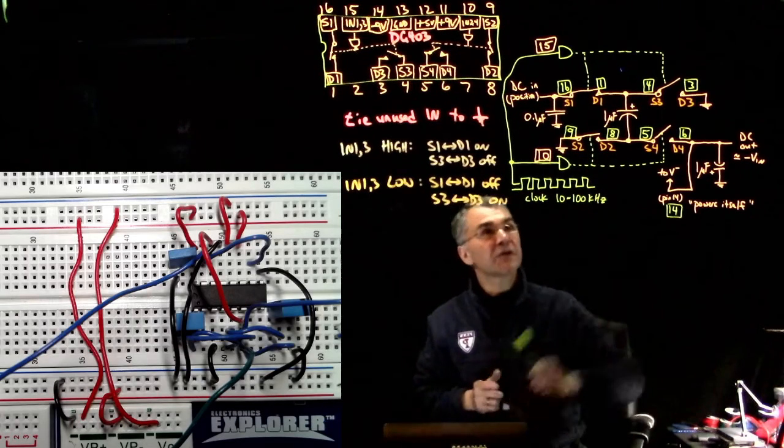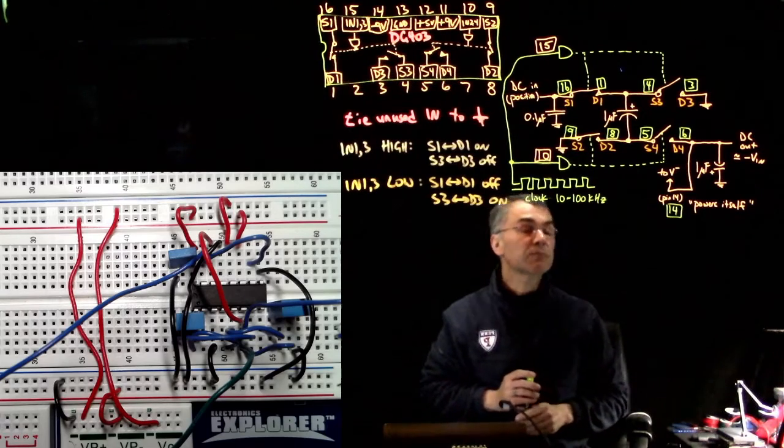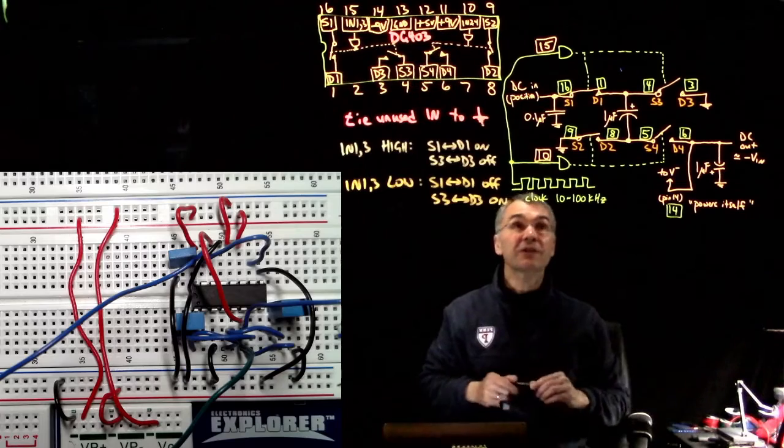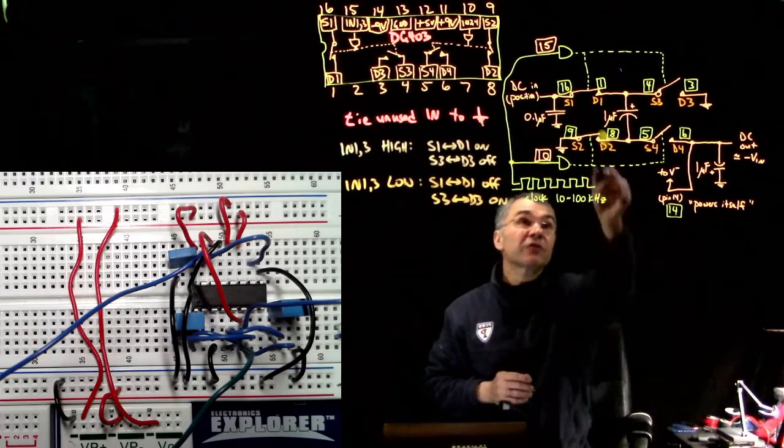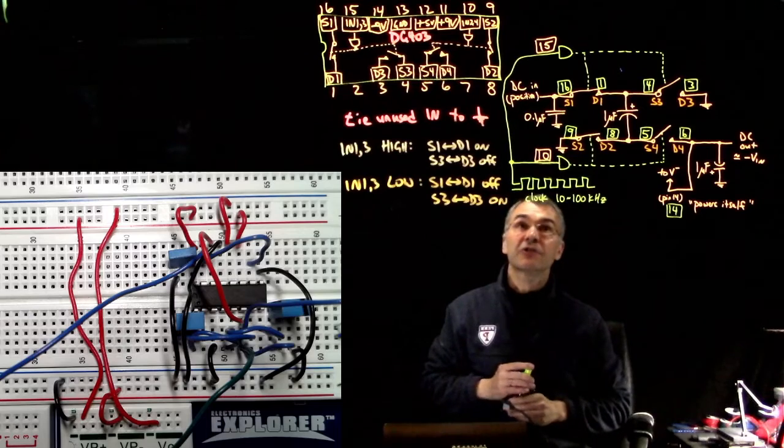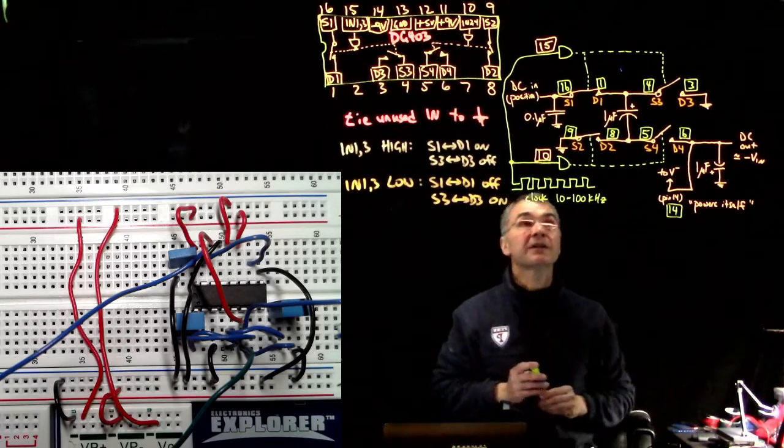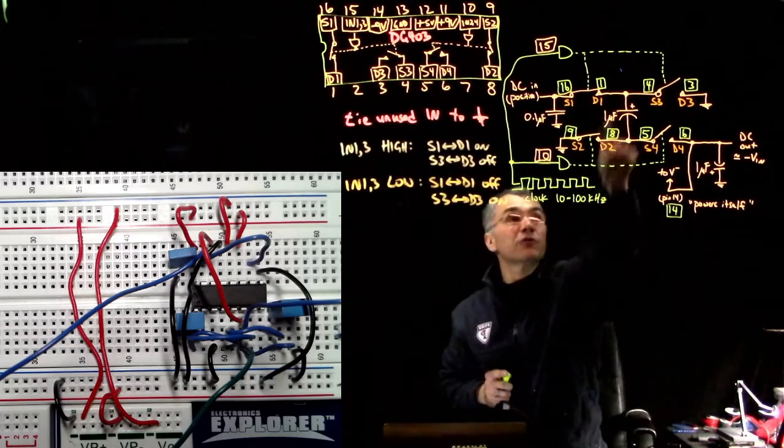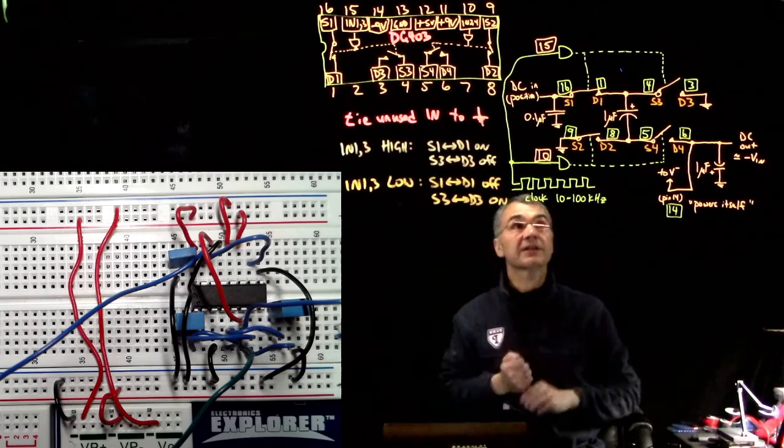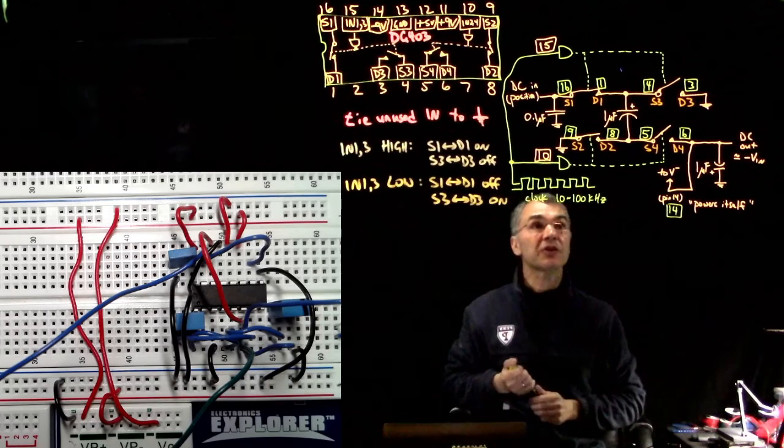Now, Tom's circuit diagram draws the 1 microfarad capacitors as if they were polarized, as if they were electrolytic capacitors. It turns out the 1 microfarad capacitors in your kit are nylon capacitors that are not polarized, so it doesn't make any difference which way you plug in the capacitor. I don't know if there's anything really special that needs to be pointed out.